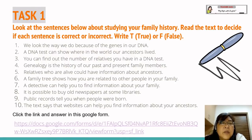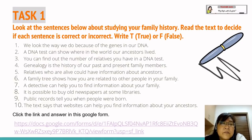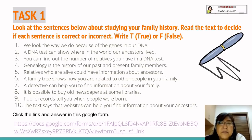Number one: We look the way we do because of the genes in our DNA — true or false? Number two: A DNA test can show where in the world our ancestors lived. Number three: You can find out the number of relatives you have in the DNA test. Number four: Genealogy is the history of our past and present family members.